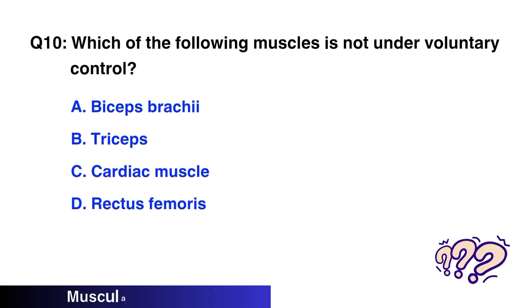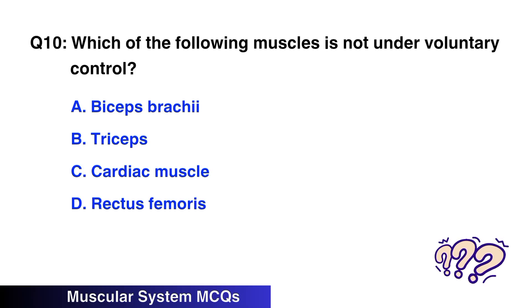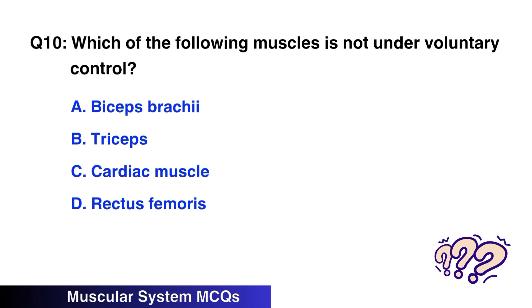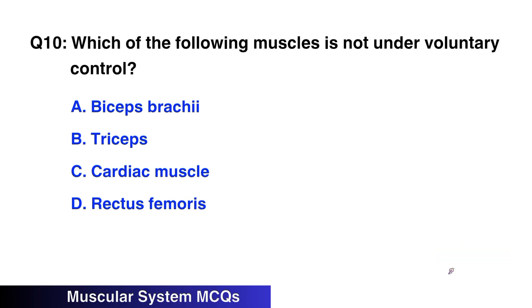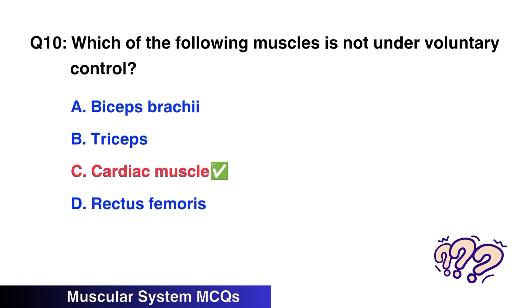Question No. 10: Which of the following muscles is not under voluntary control? The right option is C: Cardiac muscles.